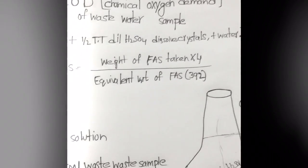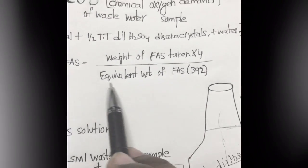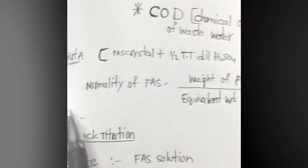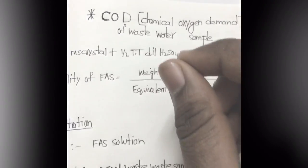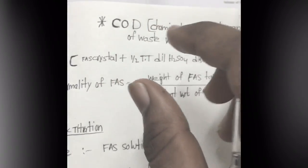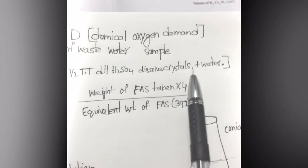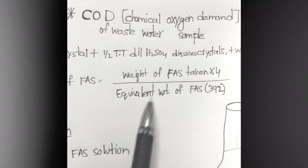To find the normality of FAS, we use the formula: weight of FAS crystals taken, multiplied by 4, divided by the equivalent weight of FAS which is 392. So in Part A: take FAS crystals, add half a test tube of dilute H₂SO₄, dissolve, dilute up to the mark, then calculate normality using weight × 4 / 392.